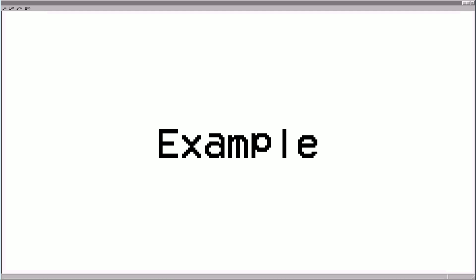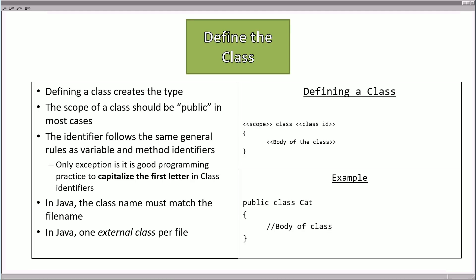Let's start creating a class. We'll go over these steps and go back and forth to the code to demonstrate what's happening. When you define a class this creates the type. Defining a class requires a scope — generally public — followed by the class identifier. These identifiers follow the same rules as variable and method identifiers, except it's good practice to capitalize the first letter. In Java, the class identifier must match the file name, and there is one external class per file. Every time you need a new class, you need a new file.